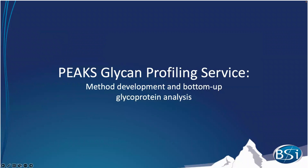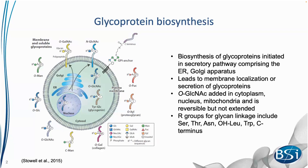Just a brief overview of glycoprotein biosynthesis and glycoproteomics. Cells synthesize a wide assortment of glycoproteins in which different amino acids can be modified to contain specific glycan structures. Biosynthesis of such glycoproteins is initiated in the secretory pathway comprising the endoplasmic reticulum and the Golgi apparatus, and can lead to membrane localization or secretion. Additionally, O-N-acetylglucosamine can be added to proteins in the cytoplasm, nucleus, and even the mitochondria — this single residue is not extended but can be reversibly added and removed.